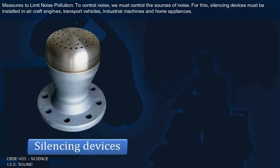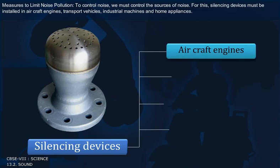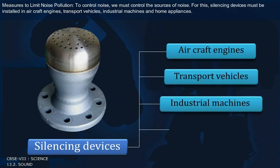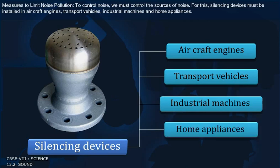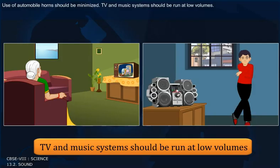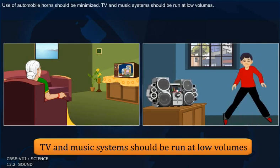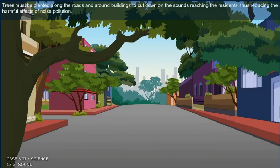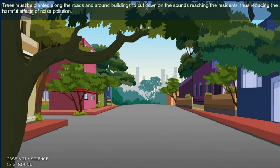Measures to limit noise pollution. To control noise, we must control the sources of noise. For this, silencing devices must be installed in aircraft engines, transport vehicles, industrial machines and home appliances. Use of automobile horns should be minimized. Television and music systems should be run at low volumes. Trees must be planted along the roads and around the buildings to cut down the sounds reaching the residents, thus reducing the harmful effects of noise pollution.